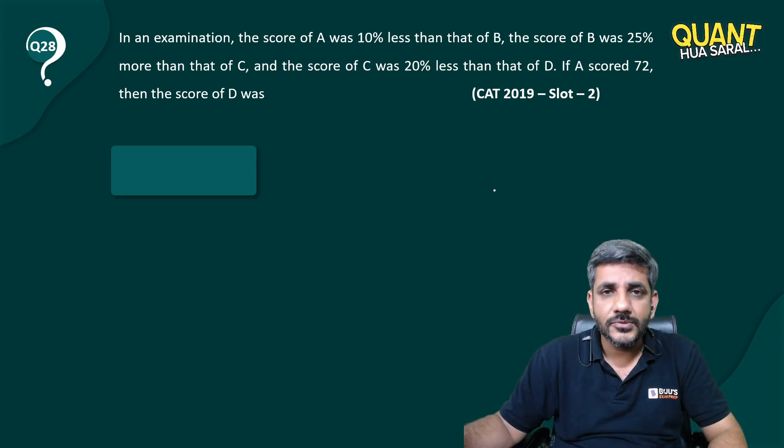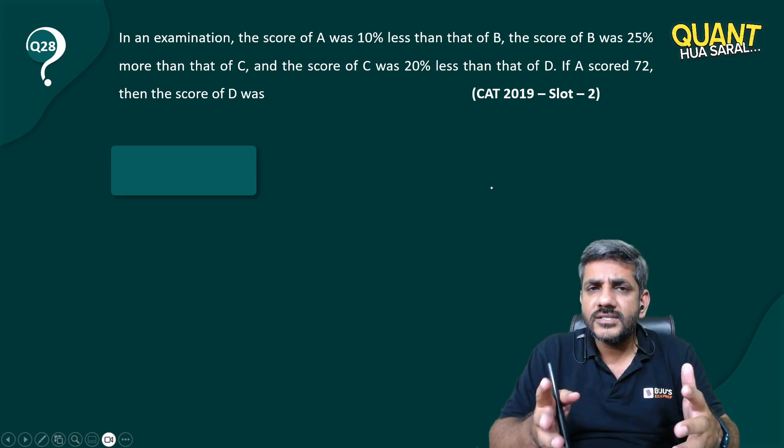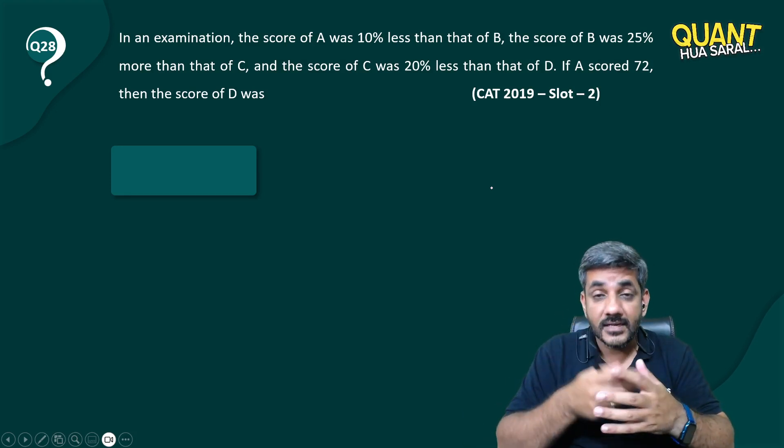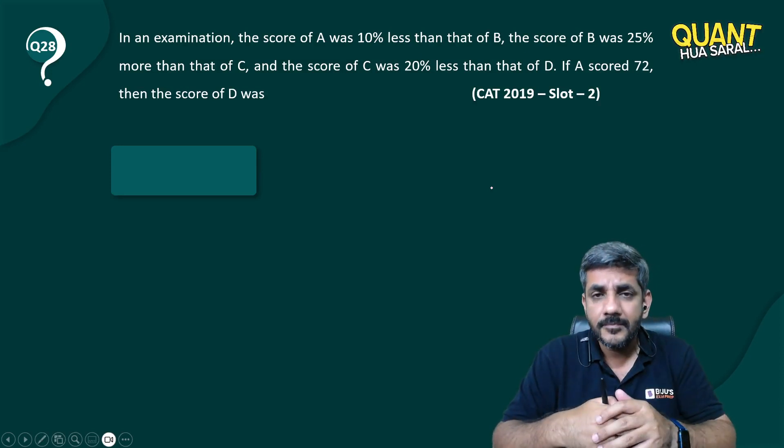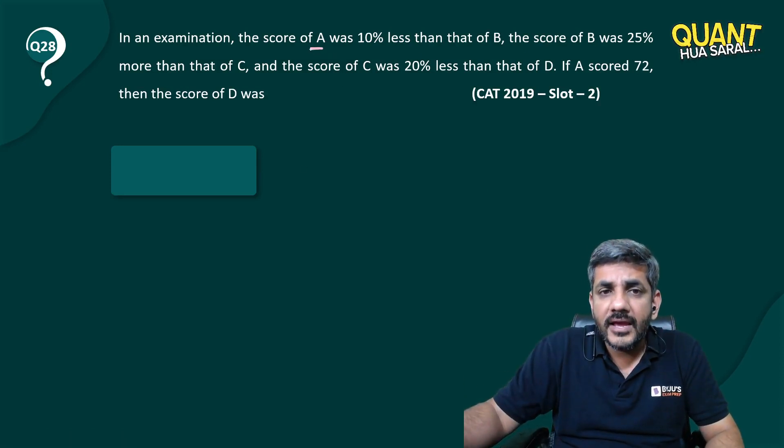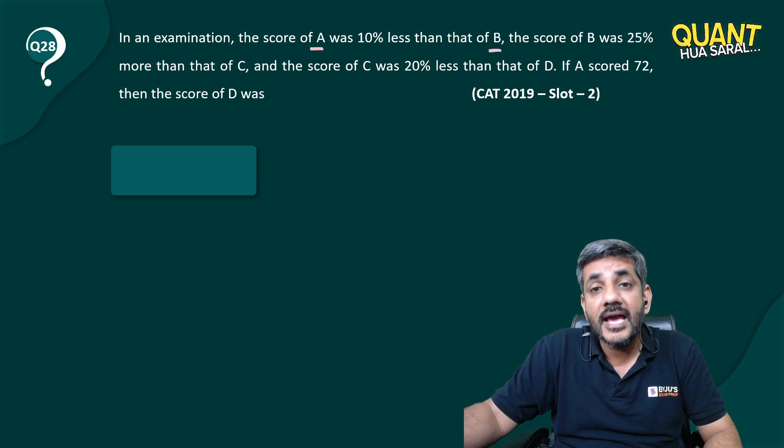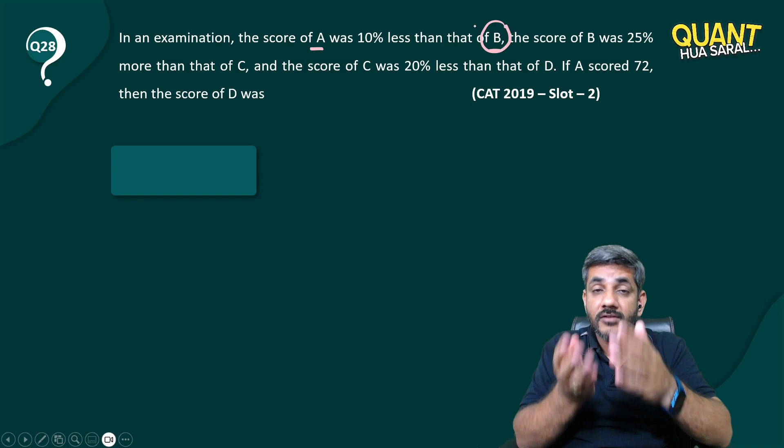Normally in questions of percentages, I assume something as 100. So what should I assume here as 100? Should I assume B as 100, or A, or C, or D? When it says the score of A was 10% less than B, that means B is the base, right? If I have the value of B, I will get the value of A.